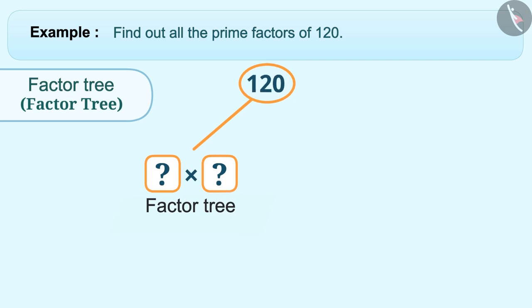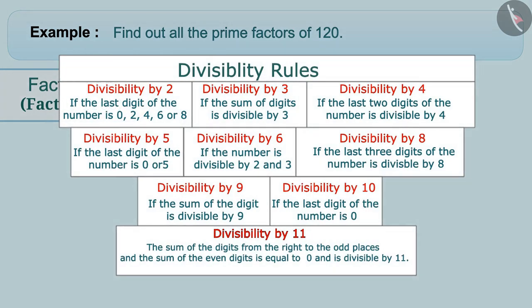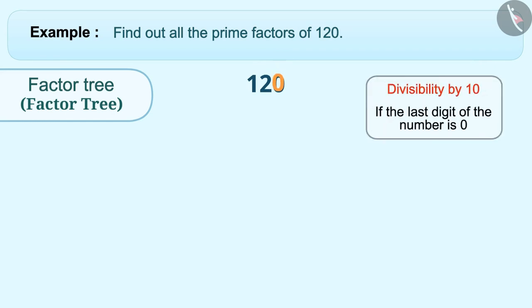There can be many factor pairs, like 4 and 30, 8 and 15, 5 and 24, etc. If you have difficulty finding the factor pair, you can use divisibility rules to find it easily. Since the end digit of 120 is 0, this number can be divided by 10.